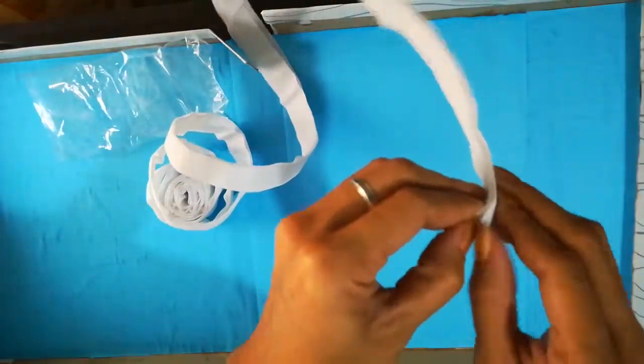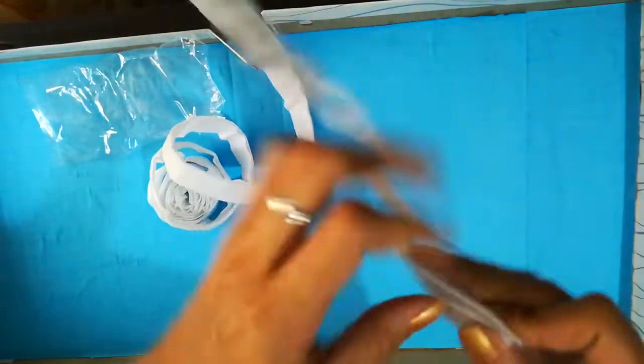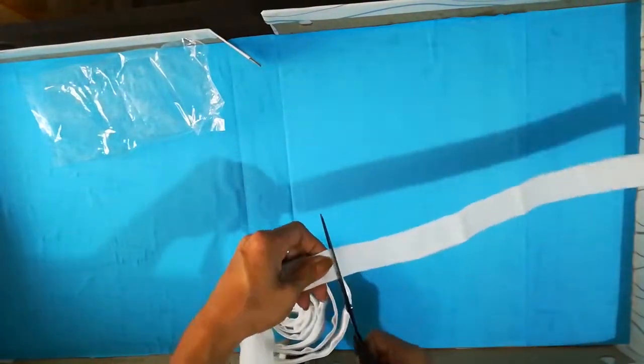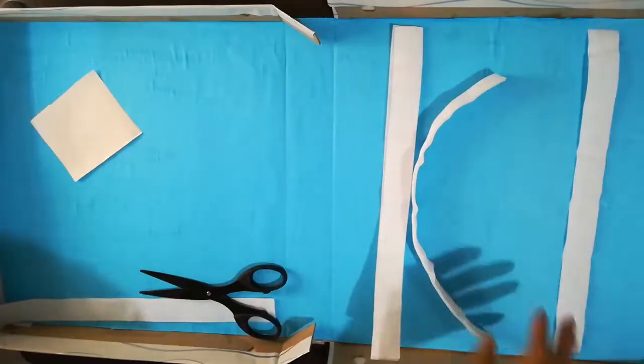Get your hook and loop magic tape, cut it to your preferred length, and using the hot glue gun, stick it inside the pizza box.